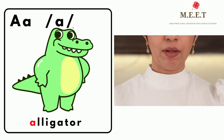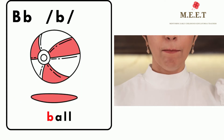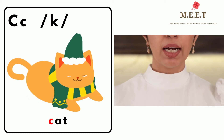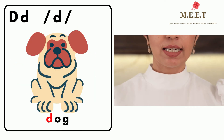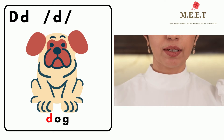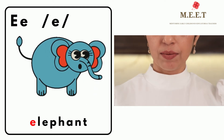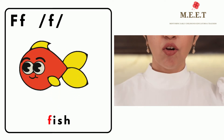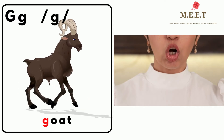'a' as in alligator. 'b' as in ball. 'c' as in cat. 'd' as in dog. 'e' as in elephant. 'f' as in fish. 'g' as in goat.